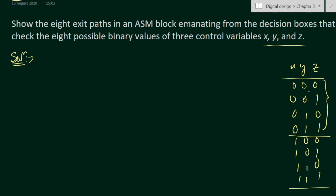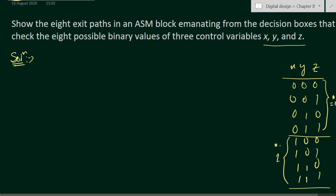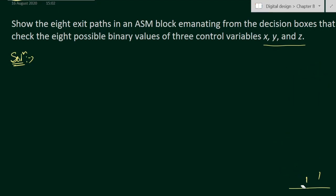For the first four combinations, X is equal to zero, and for the second four combinations, X is equal to one. Now let us make the ASM chart. We'll have a total of eight combinations, so the first decision box represents X.